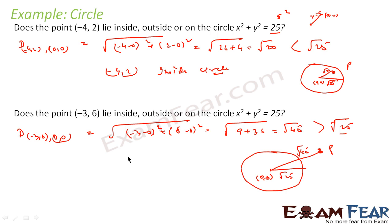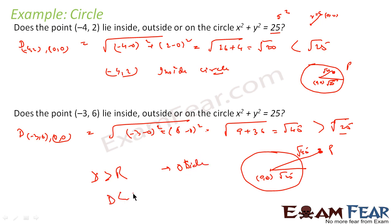So if asked to find whether a point is outside or inside a circle, just find the center of the circle and then find the distance between that point and the center. If the distance is greater than r, the point is outside. If the distance is less than the radius, the point is inside. That is the logic we have to follow.